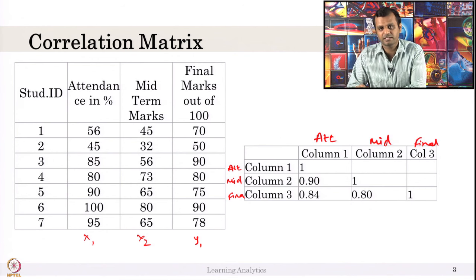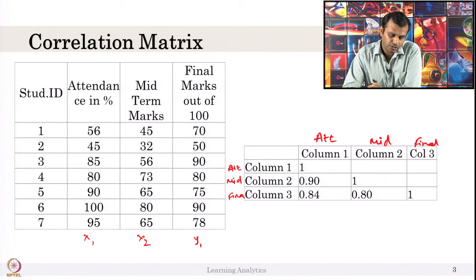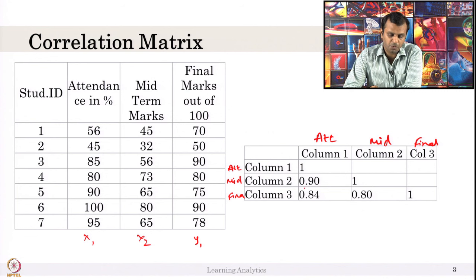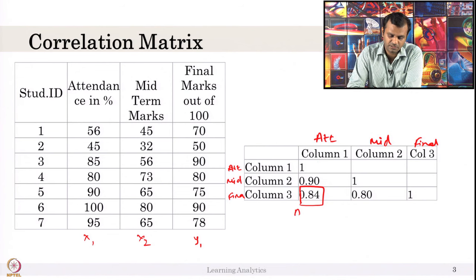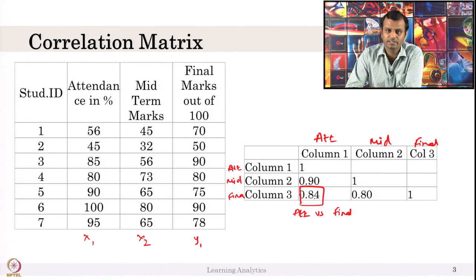This matrix is created using Excel — a simple tool available in Excel can help you do that. Is there a relationship between column 2 and column 1? Yes, these two are highly correlated: 0.9. Is there a relationship between column 1 and column 3? That is 0.84. This is the correlation coefficient between attendance versus final marks. If a student has more attendance, it is highly likely they score better compared to students who have low attendance.